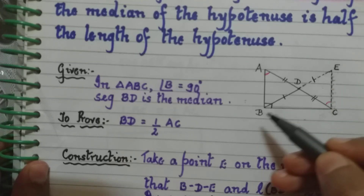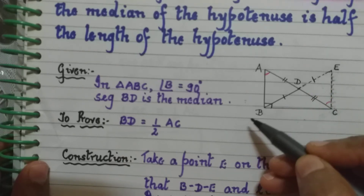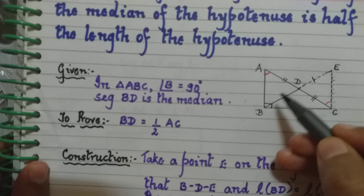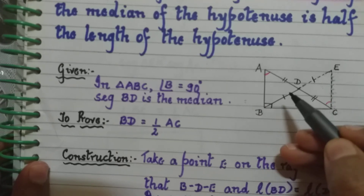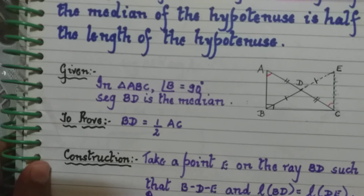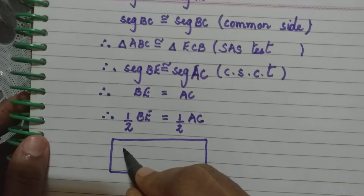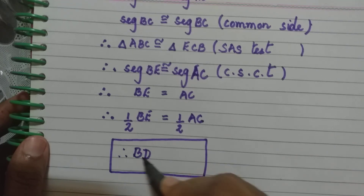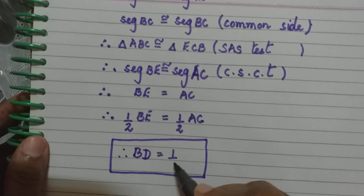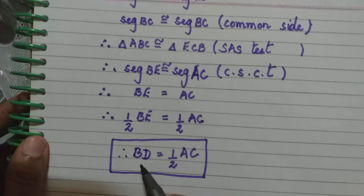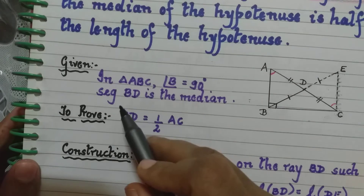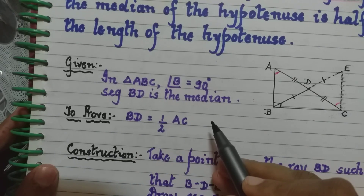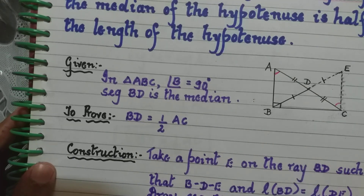Half of BE is just BD. Therefore, BD equals half of AC. That is exactly what we had to prove — BD equal to half AC — so the theorem is proved.